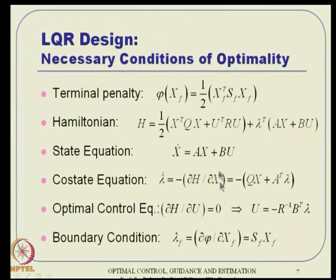The boundary condition: since the terminal penalty is phi = (1/2)X_f^T S_f X_f, we get del phi / del X_f = S_f X_f. So lambda(T_f) = S_f X_f. All conditions — state equation, costate equation, optimal control equation, and the boundary condition — need to be satisfied for our control solution.